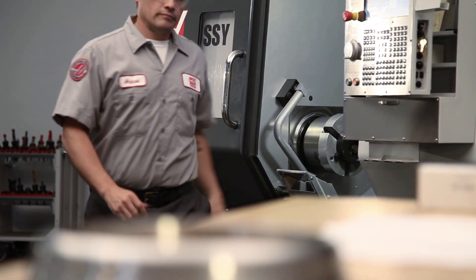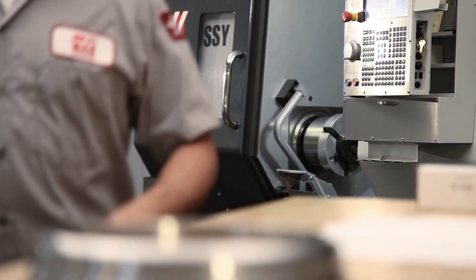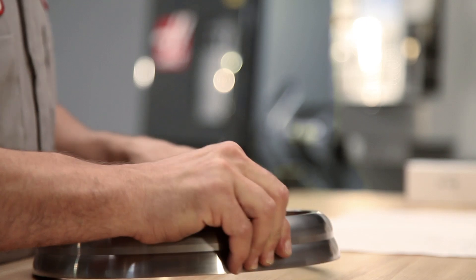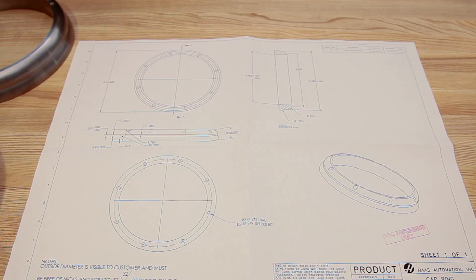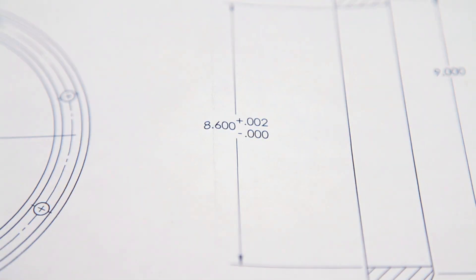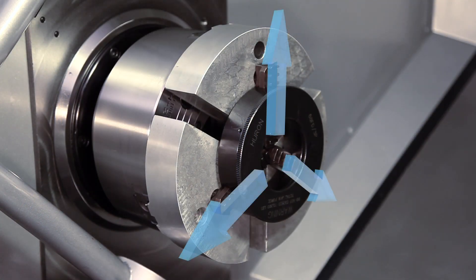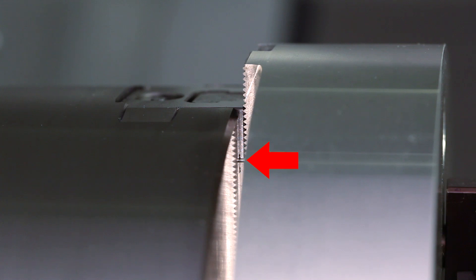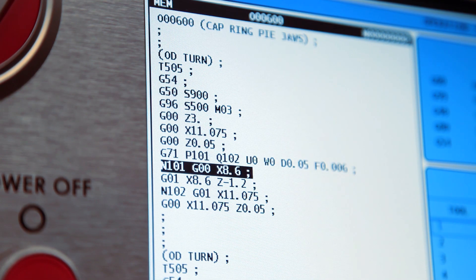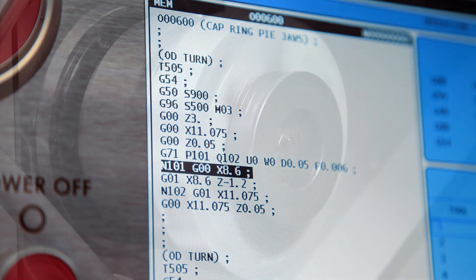Regardless of what kind of ID gripping jaws you are using, jaws holding the inside diameter of the workpiece should always be cut to match the nominal workpiece diameter. With the jaws pushing outward against the boring ring at 100 psi, the master jaws at mid-stroke, and our program set to cut to the nominal part diameter, these jaws are ready to cut.